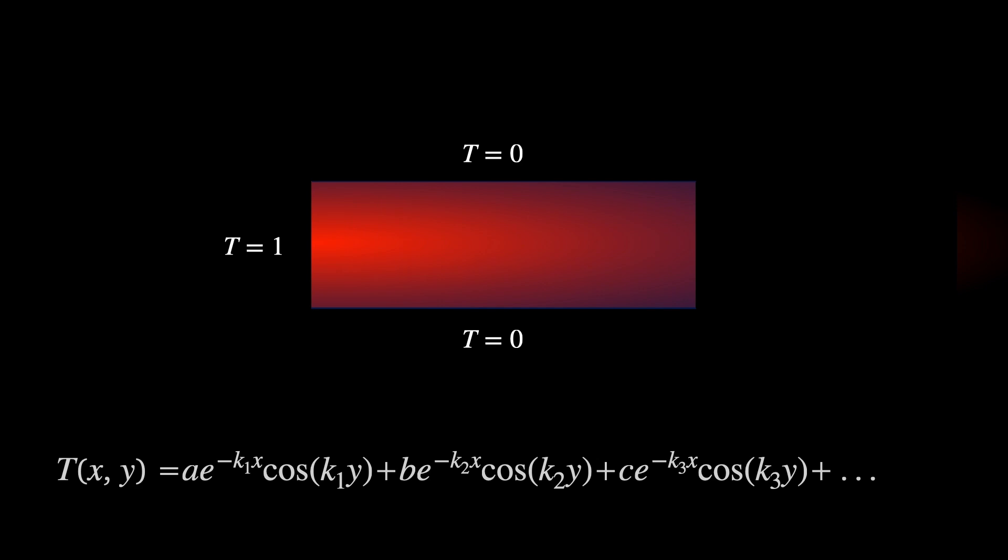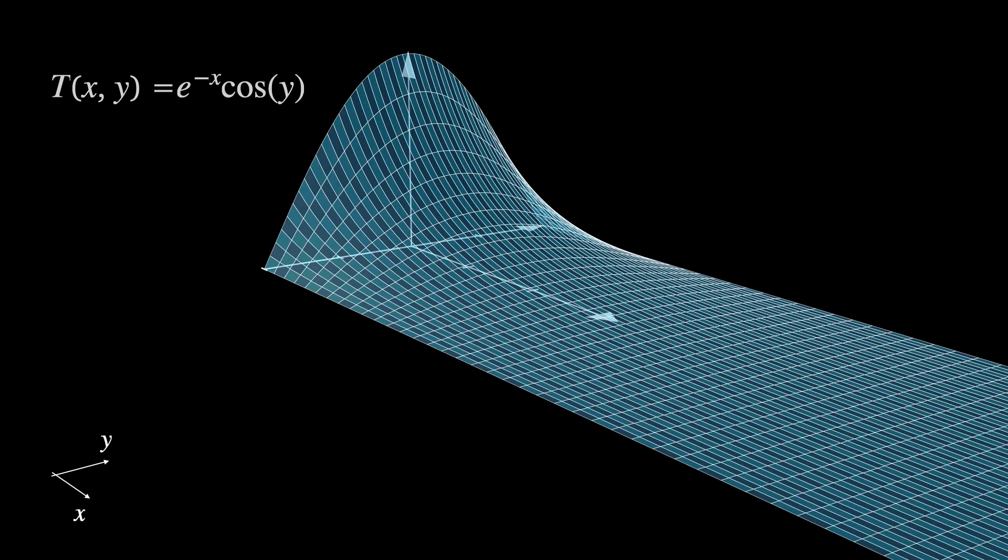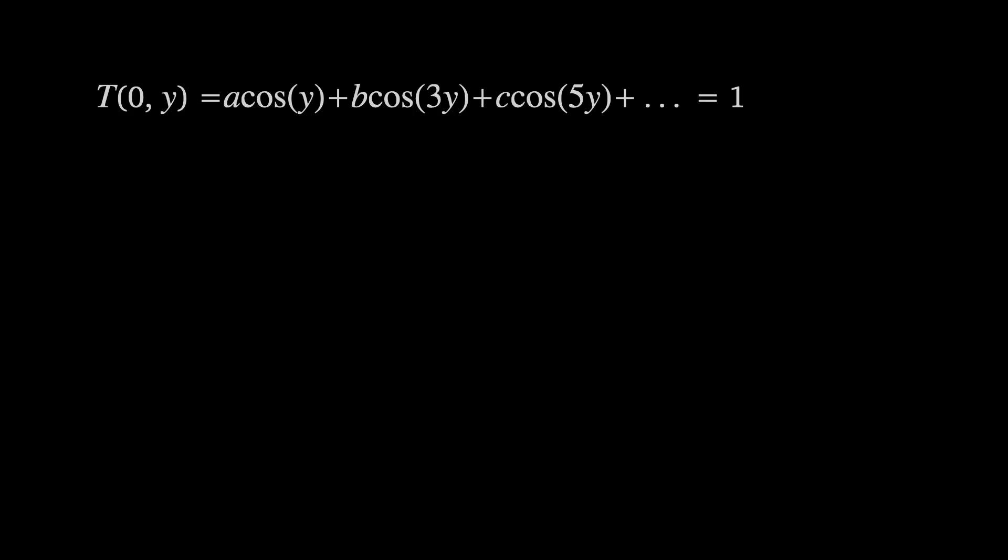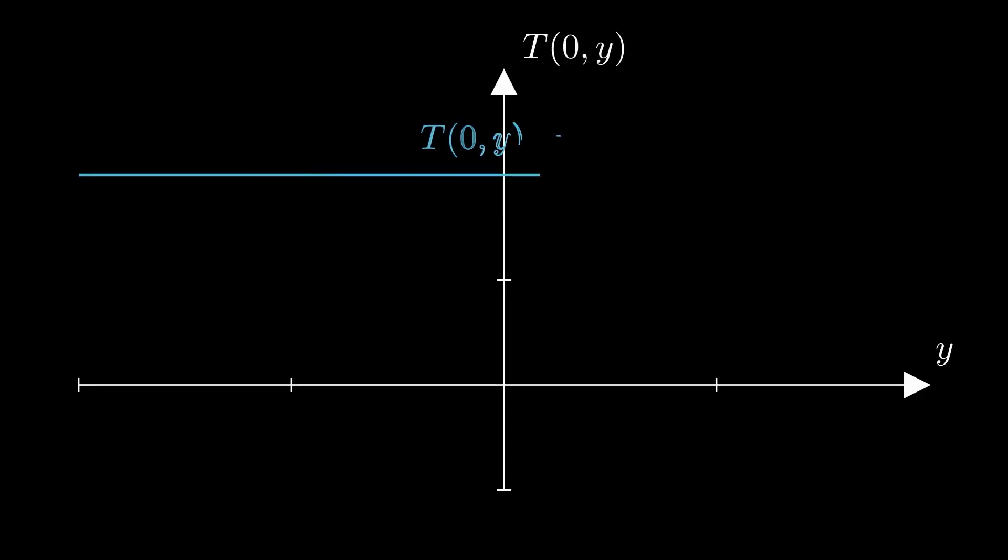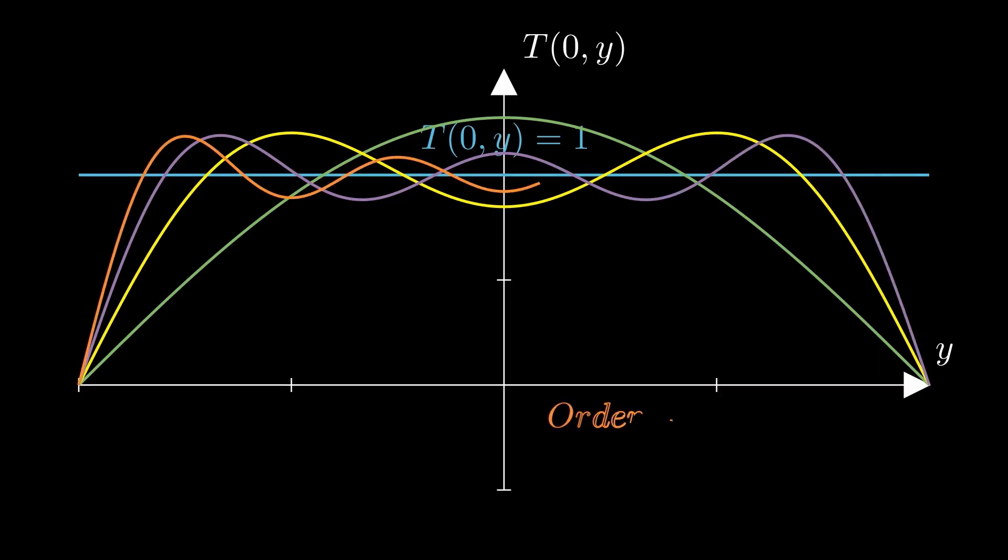Firstly, since cosine of y is 0 only when y is an odd number multiplied by plus or minus π over 2 we can say that the values k1, k2 etc are just the odd numbers. This gives us the right values along the T equals 0 edges but we need to make sure that T is always equal to 1 when x is 0. At x equals 0 all the exponential components become 1 which means Fourier was left with finding the coefficients such that this infinite series is equal to 1. Remember that y varies between minus π over 2 to π over 2 so this is the same of finding an infinite series of cosines such that they always add up to 1. But how do you go about finding these coefficients?